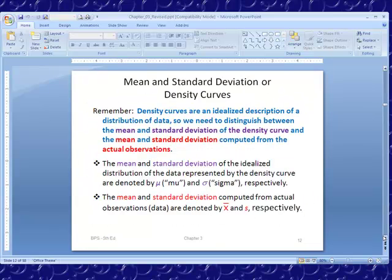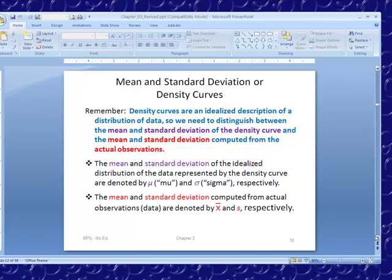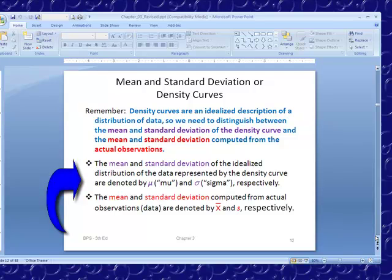Density curves are idealized descriptions of data. We need to distinguish between the mean and standard deviation of a density curve and those computed from actual observations. The mean and standard deviation of the idealized distribution is represented by μ (mu) and σ (sigma). The mean and standard deviation computed from actual observations is x̄ and s.